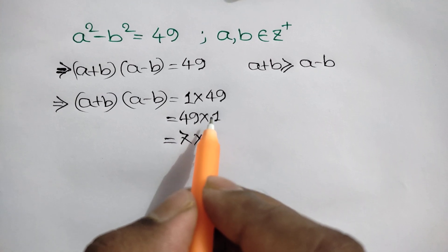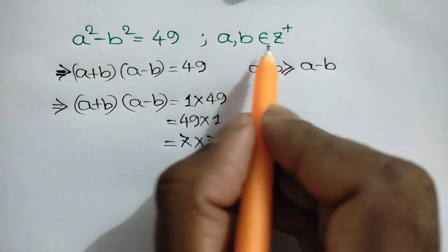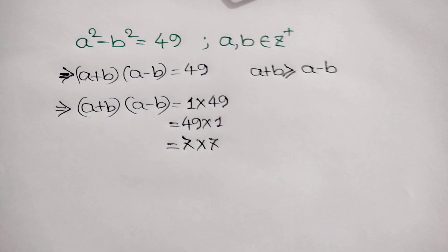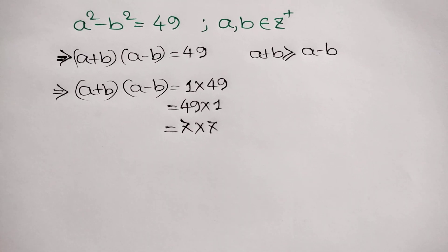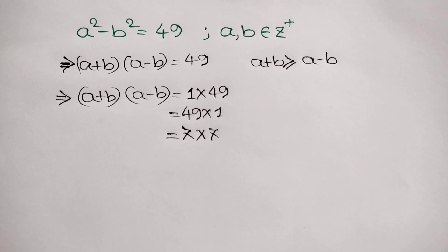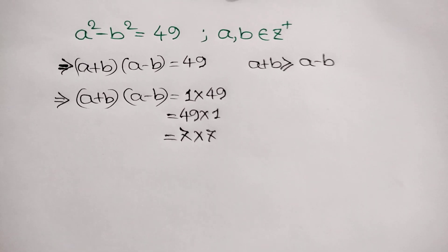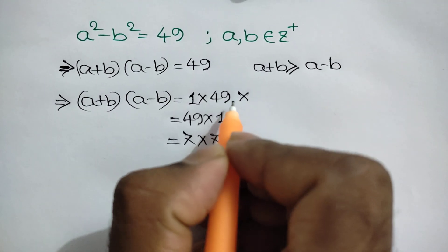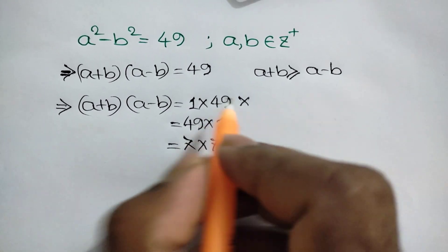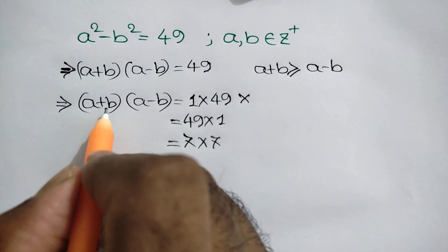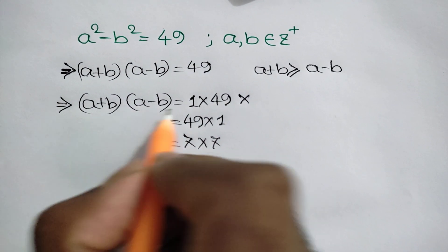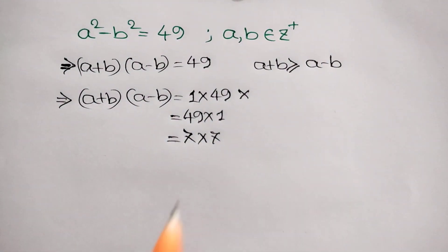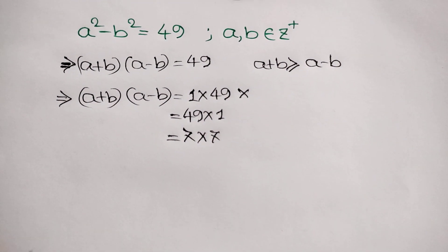The values are always positive because a and b are positive integers. The case 49 times 1 is rejected because a plus b must be greater than a minus b, so there are two possible cases.